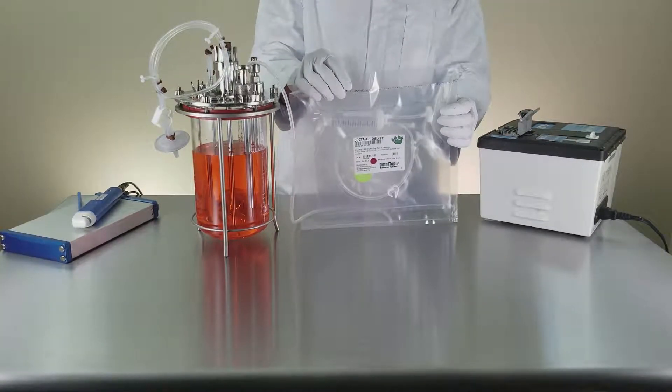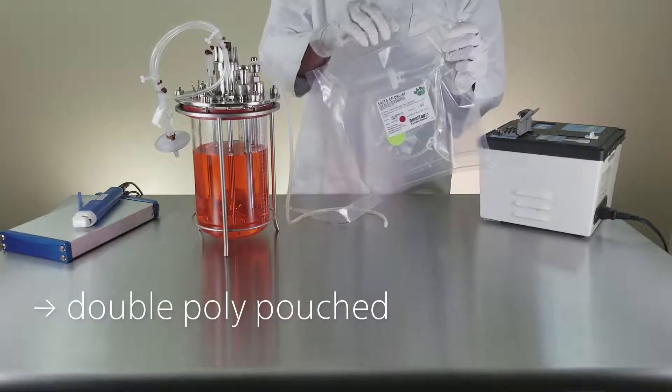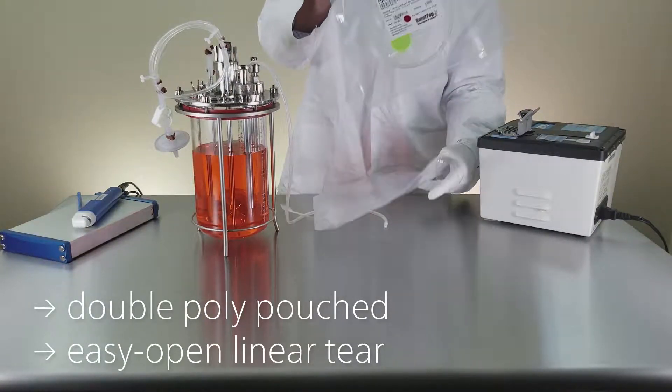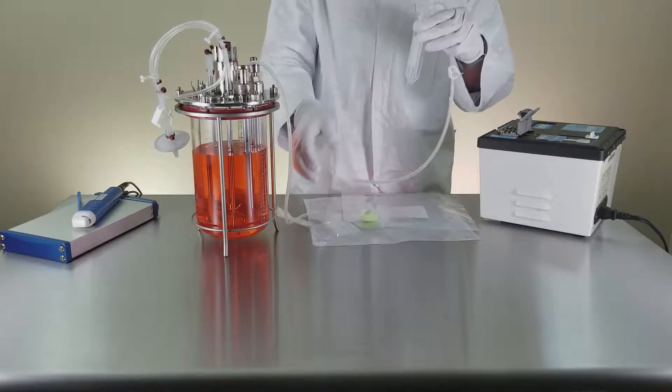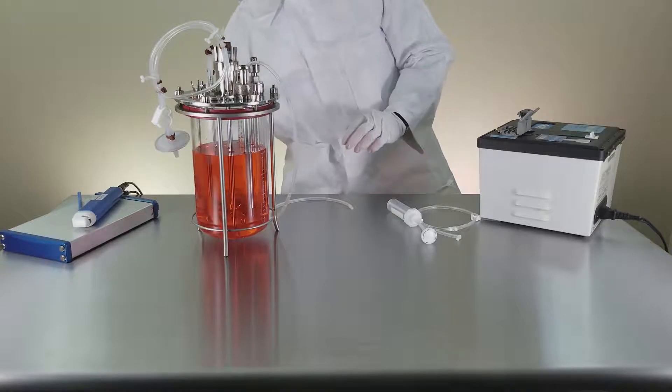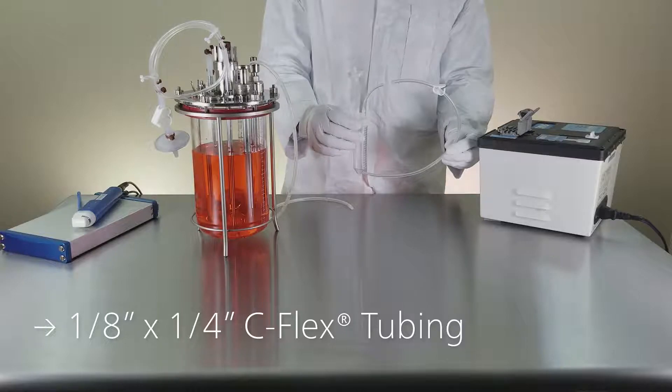As you open your Omnitop standard tubing assembly, you'll find that it is double poly pouched and features special linear tear pouches for easy opening. Here we use 1/8 inch by 1/4 inch C-flex tubing standard on all Omnitops.